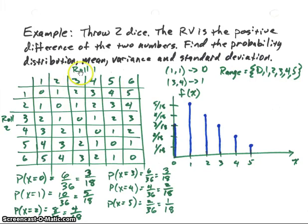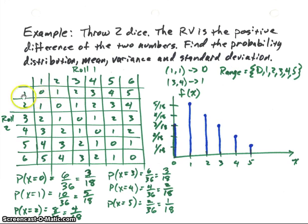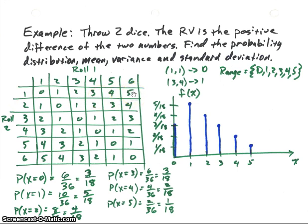I've got a table showing die one and die two. We know each outcome has a probability of one thirty-sixth of occurring, but the random variable is the difference of the two. So I've written the difference in the table. If I have a one and a one, I get zero. If I have a one and a two, I take the positive value and put a one. One and three gives two, and so on. The largest number I can have is five. So our range for the random variable is zero, one, two, three, four, five.